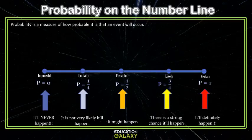Probability can be measured on a number line. The probability that something is impossible is zero. The probability that something is certain is one. And in the middle, if it's equally likely, it's a probability of one half.